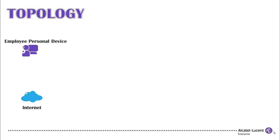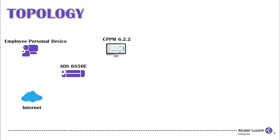In this topology, we will need a Windows laptop device for the onboarding process, an Alcatel-Lucent Switch 6850e running software version 6.4.6 R01, and a ClearPass Virtual Machine running version 6.2.2 with the appropriate software licenses.